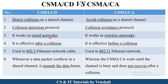CSMA/CD mainly works in wired networks, while CSMA/CA works in wired as well as wireless networks. CSMA/CD is effective after a collision has occurred, whereas CSMA/CA is effective before a collision occurs. CSMA/CD is used in 802.3 Ethernet networks, and CSMA/CA is used in 802.11 networks — which are called Wi-Fi or hotspot networks. In CSMA/CD, when a collision occurs in the shared channel, data is retransmitted. In CSMA/CA, collision is avoided and no data recovery is performed.